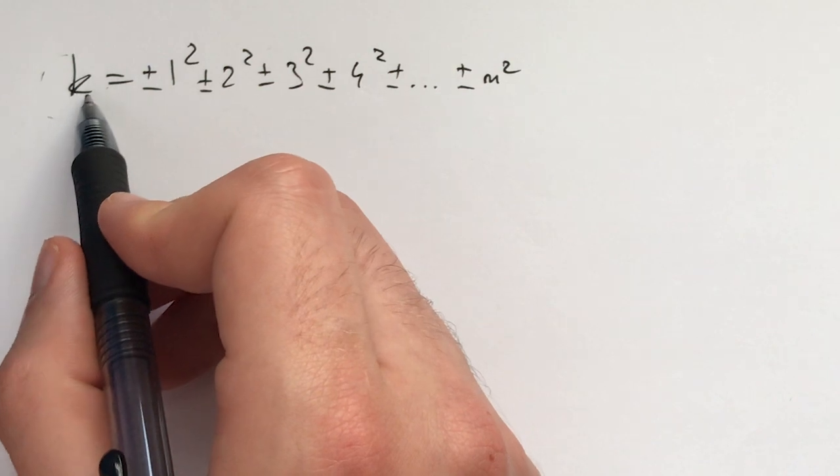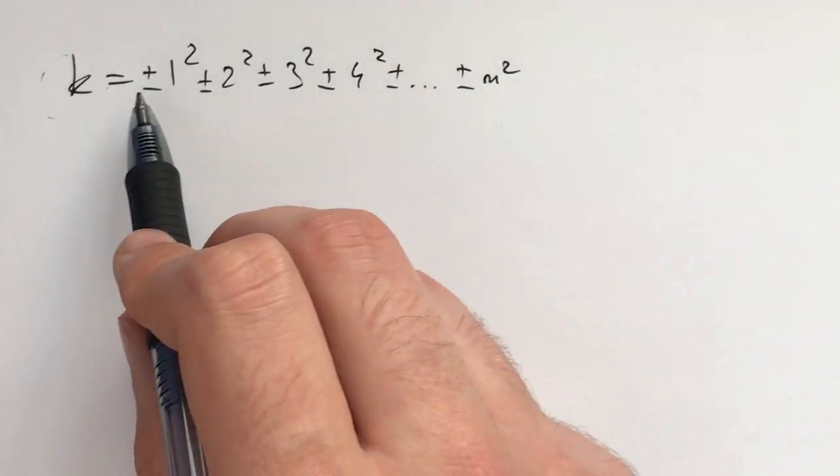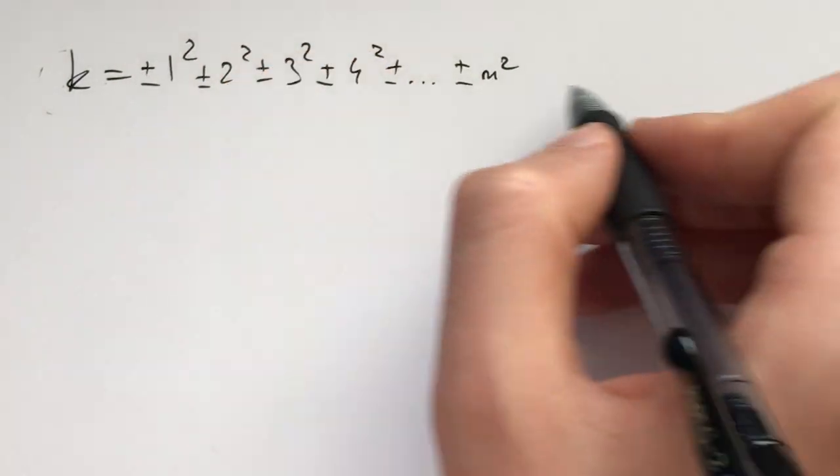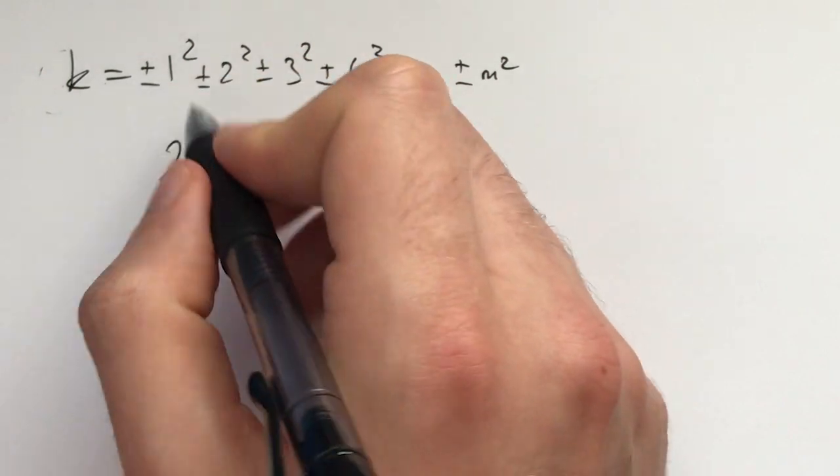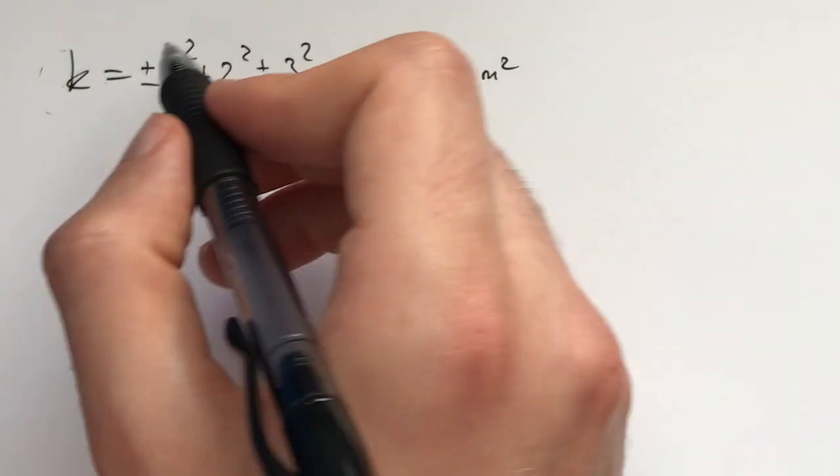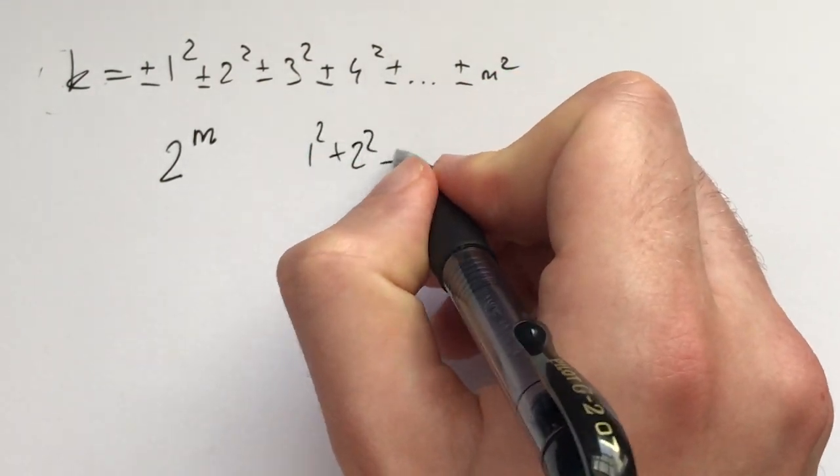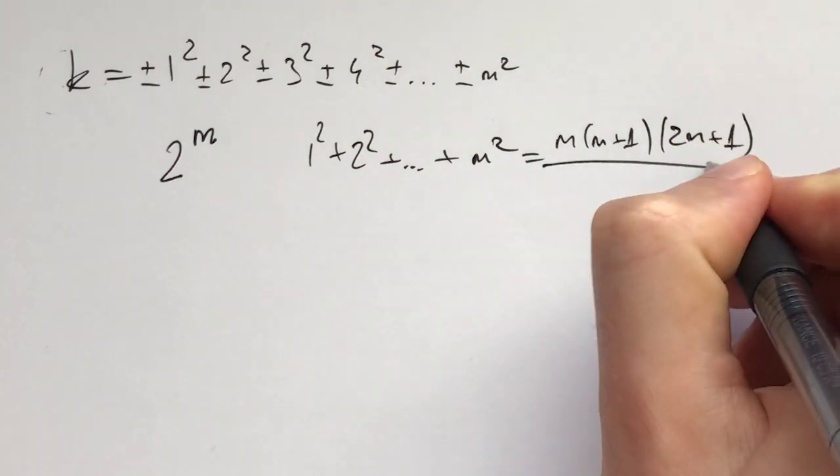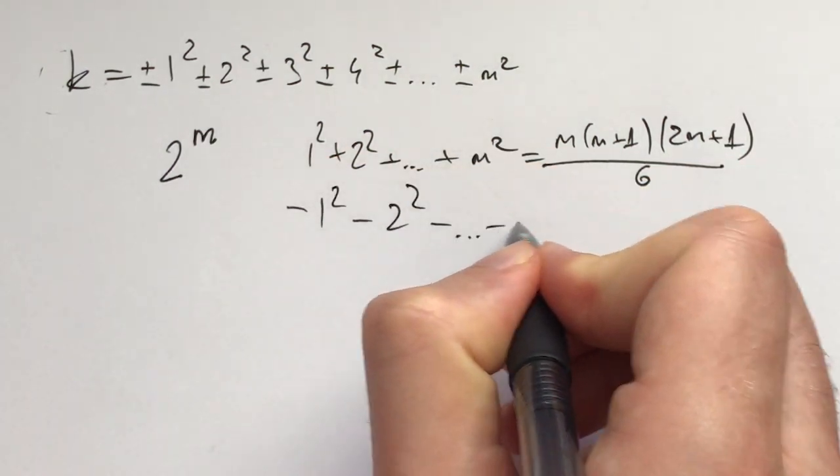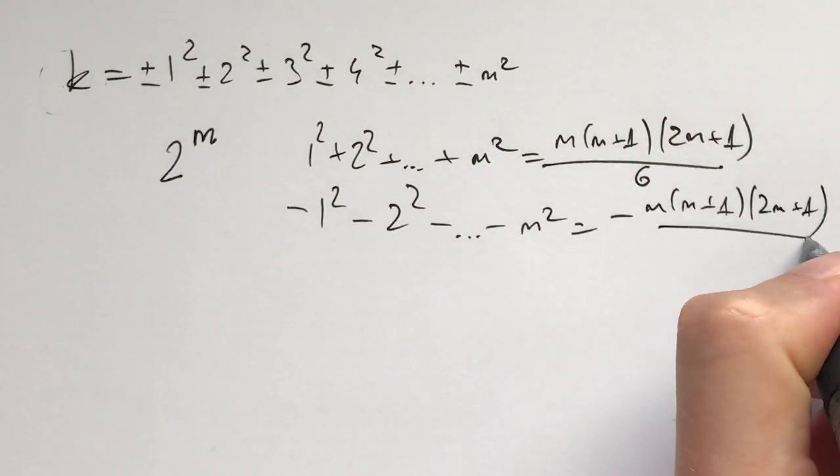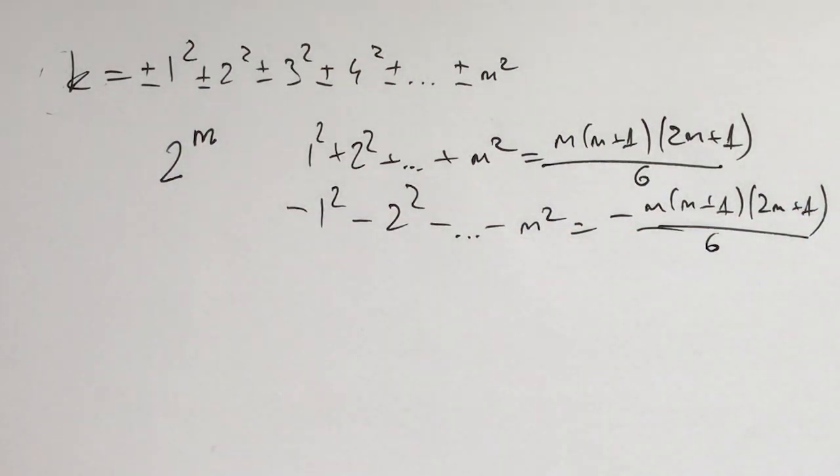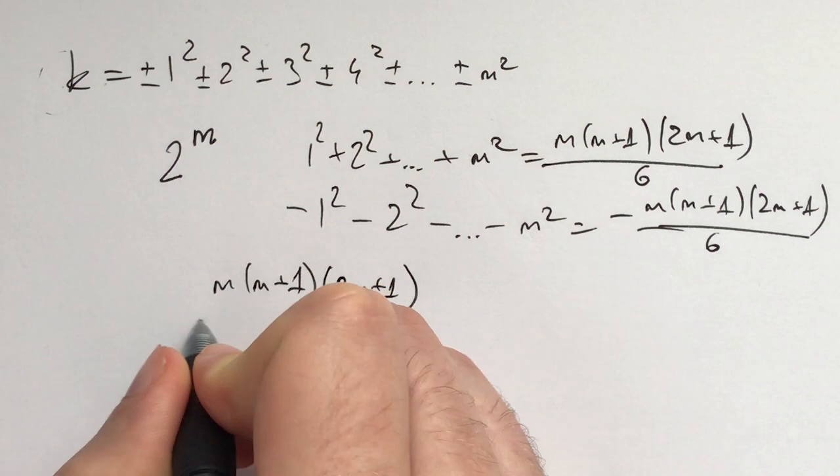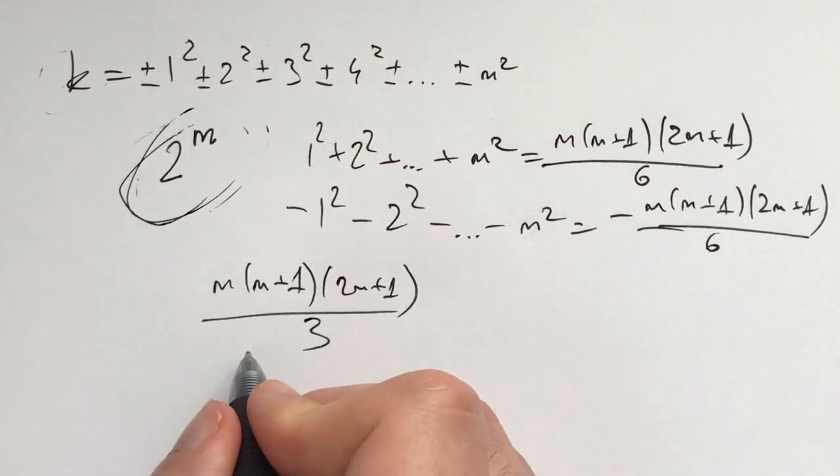So this is our problem. For every k as fixed, we need to find infinitely many m and each corresponding choice of signs plus and minus such that this is true. Now one idea you may have is that for every single m you have 2 to the power of m possible possibilities. We're flipping these signs and the sum can be at most 1² + 2² + ... + m², which equals m(m+1)(2m+1)/6. On the other hand, its minimum would be the negative of this. And you would think there are how many numbers in this interval versus 2 to the m possibilities.